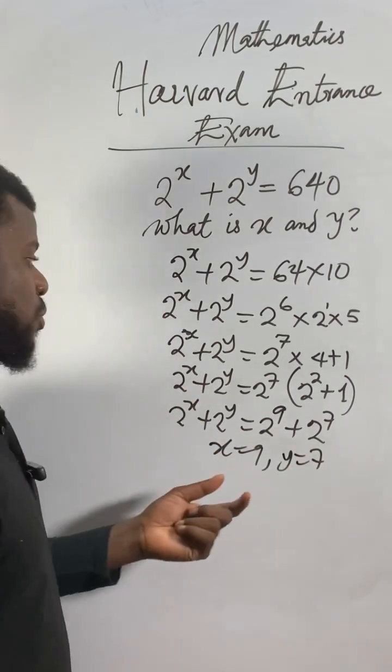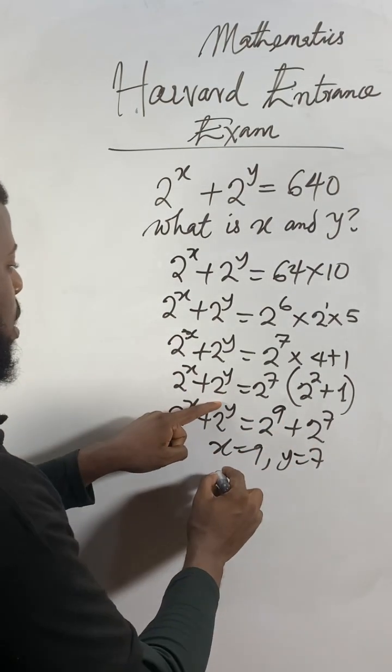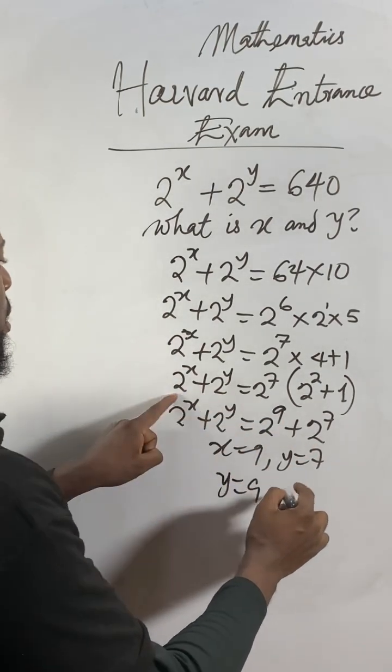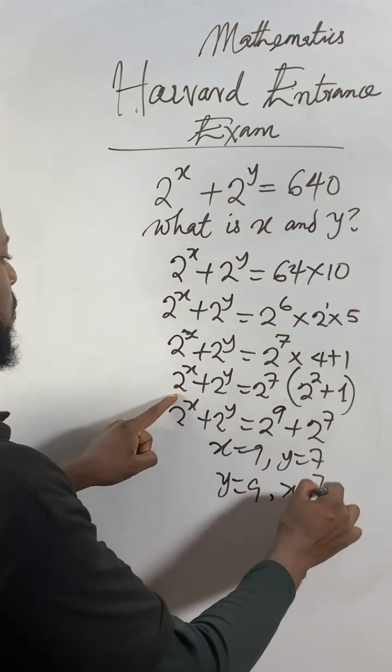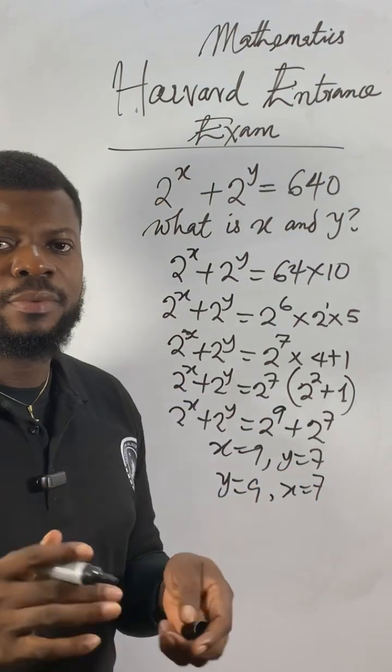If you like, you can reverse them too. If you say y equals 9 and x equals 7, no problem.